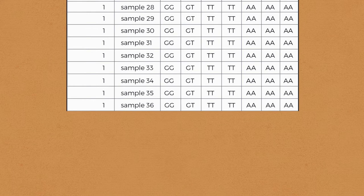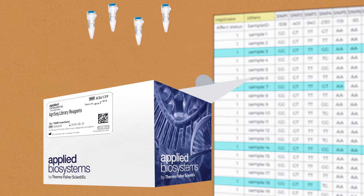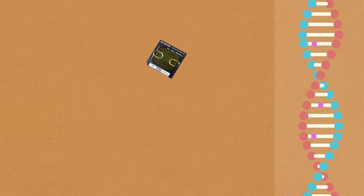For studying individual traits, scientists may only need to analyze a few hundred or thousand DNA variations. In this situation, AgriSeq targeted resequencing is the best approach.